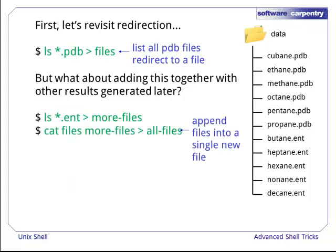Then we can use our concatenate cat command to create a new file which has the contents of both files in it. But it's a bit long-winded. Couldn't we just append the results to our existing file called files?